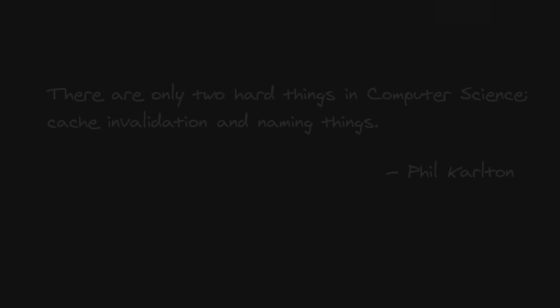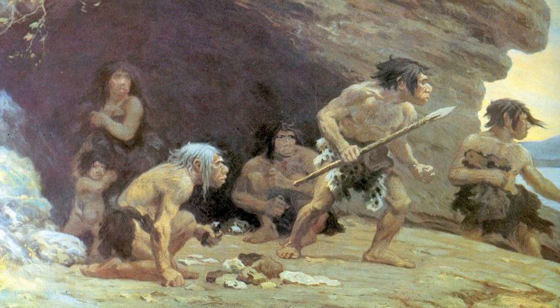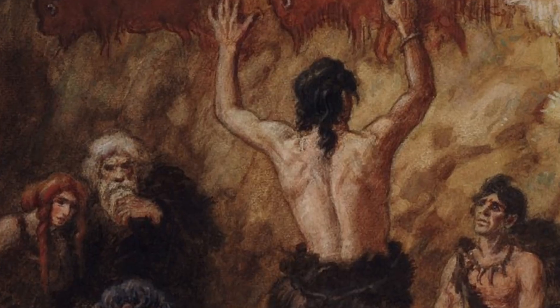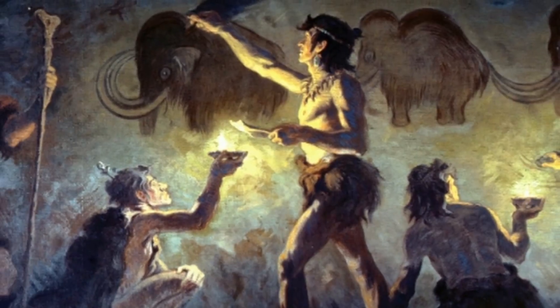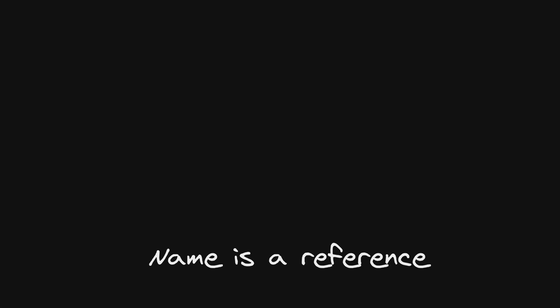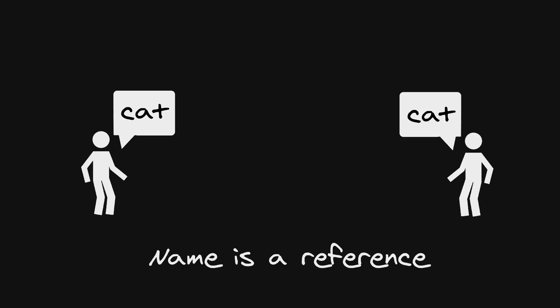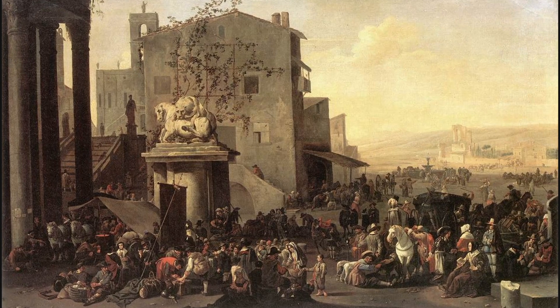The role of naming is believed to be significant in the origin of language. It is thought that early humans developed the assignment of a particular sound to represent a particular object as a way to label them and communicate about them with others. So the function of the name is that it becomes a reference shared by two or more people.